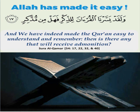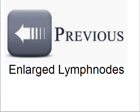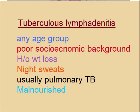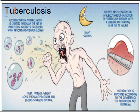Please watch the previous video on enlarged lymph nodes where we covered the normal microanatomy and causes of lymph node enlargement. Today we will discuss chronic lymphadenitis. The commonest is TB lymphadenitis — tuberculous lymphadenitis — which can affect any age group. Patients usually belong to a poor socioeconomic background and have a history of weight loss and night sweats.